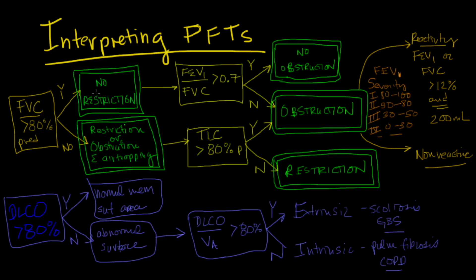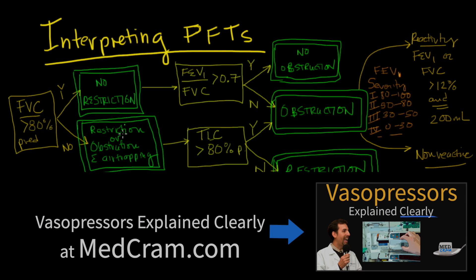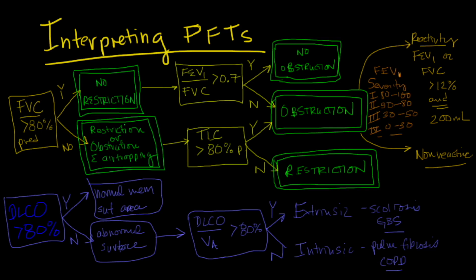To recap: if you've got an FVC greater than 80% of predicted, there's no restriction. Then look at FEV1 divided by FVC — if greater than 0.7, no obstruction; you're done. If FEV1/FVC is less than 0.7, you have obstruction with no restriction. If FVC is not greater than 80% of predicted, you could have restriction or obstruction with air trapping. The way you tell the difference is by looking at total lung capacity — if TLC is greater than 80% of predicted, it's air trapping with obstruction; if less than 80%, it's restriction causing both the low TLC and low FVC.